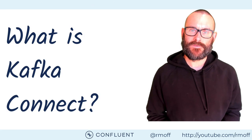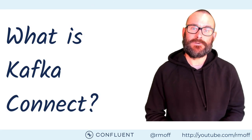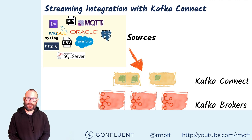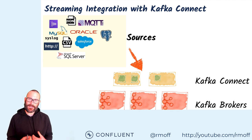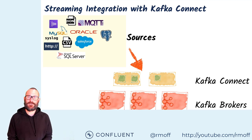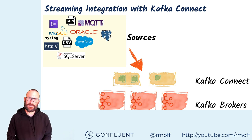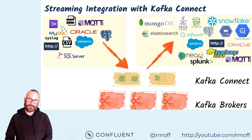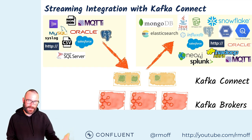Kafka Connect itself is part of Apache Kafka. It's the integration API for Apache Kafka, and it lets you build streaming integrations from systems upstream into Kafka topics, and from Kafka topics to systems downstream. So it means you can integrate all of these systems with their data flowing into Kafka and out of Kafka.